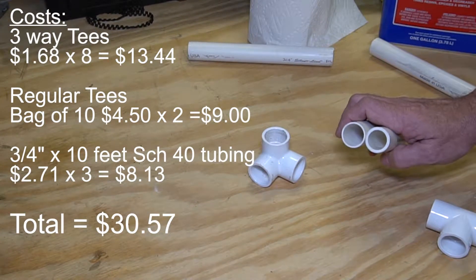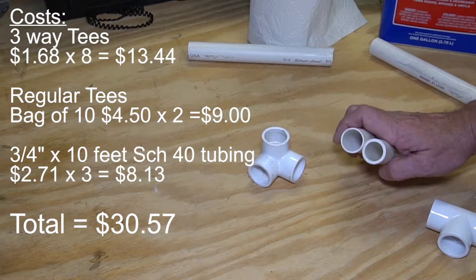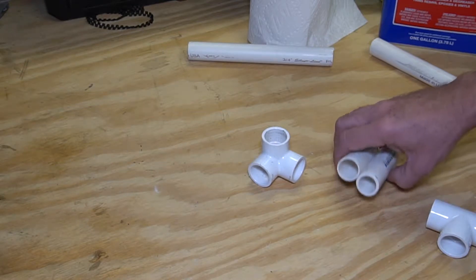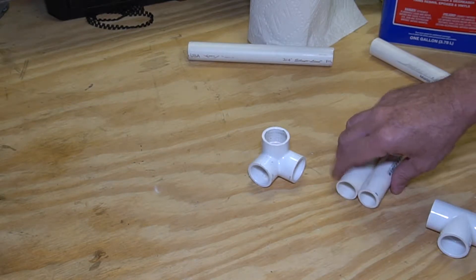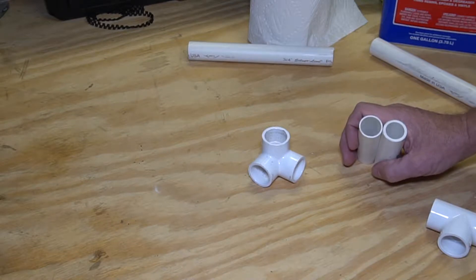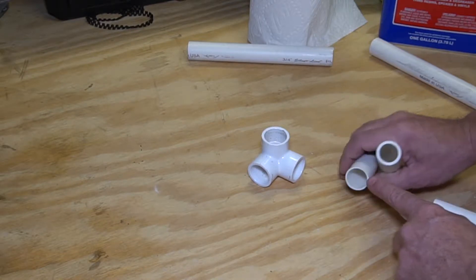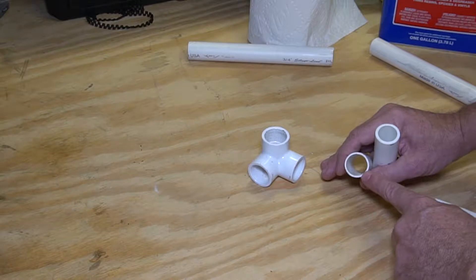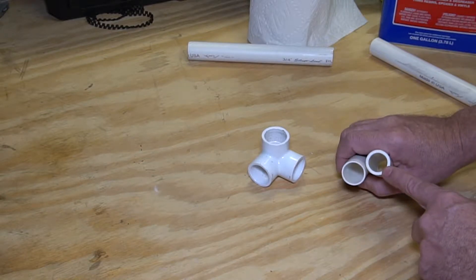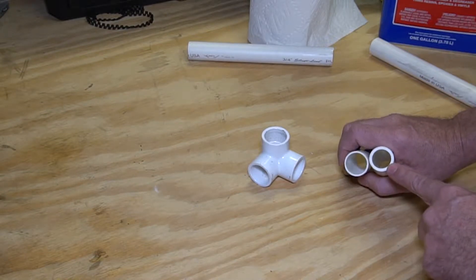I use three-quarter inch tubing because I just felt it would be nice and strong. Technically you could use half inch if you wanted to. The tubing comes in two different varieties. You could either use thin wall tubing which is used for sprinkler pipes. I use the schedule 40 tubing which you can see is quite a bit thicker.